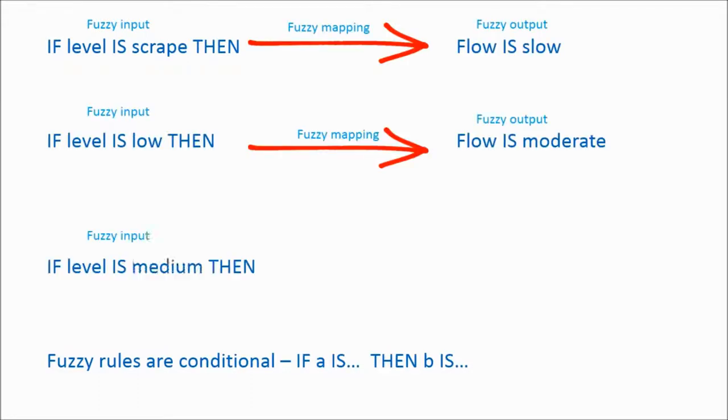Going back to our example of river levels, we may say if the level is scraped, then the flow is slow. If the level is low, then the flow is moderate, and so on. The output is also fuzzy and classified using shape functions in the same manner as the input.